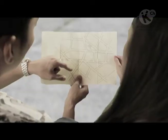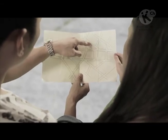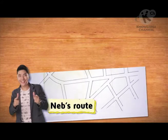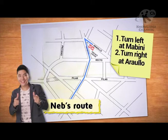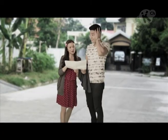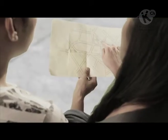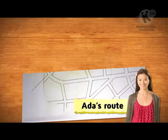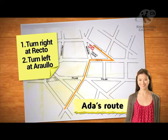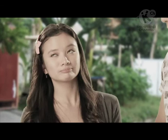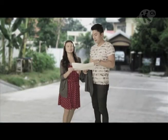Ito pinakamabilis na daan, no? Tingnan mo — dire-direcho tayo, Mabini, tapos kanan ng Arolyo. Boom! Ando na tayo! At isa pang wait — alam mo yung gutom na punta sa ulo mo? Yung Mabini, tapos right sa Recto, then left sa Arolyo — yun ang mas mabilis! Naalala mo ba yung turo ni Kuya Mike nung inaral natin tong mapa?